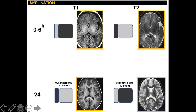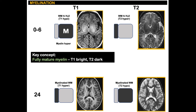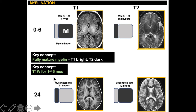At birth to six months, white matter has high water content, so we have dark signal on T1 and bright signal on T2 — T1 hypointense, T2 hyperintense. If we place myelinated white matter in this area, it should appear as bright signal against the background of water-rich white matter tracts. Therefore, when checking myelin at birth to six months, we look at the T1 weighted sequence.